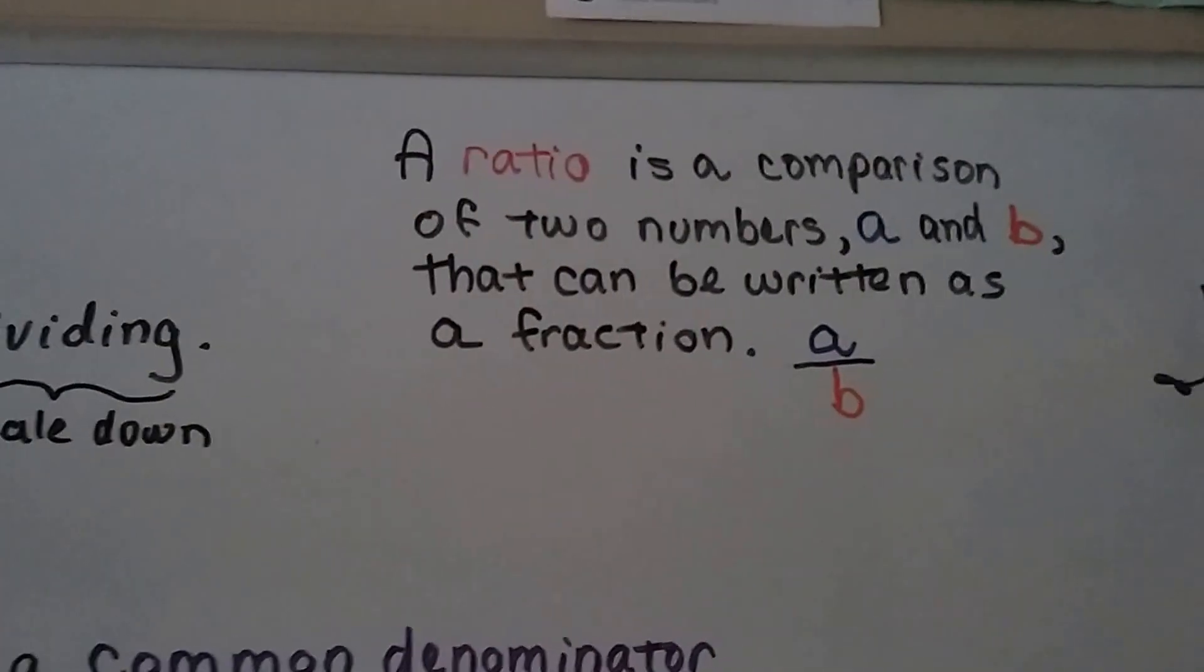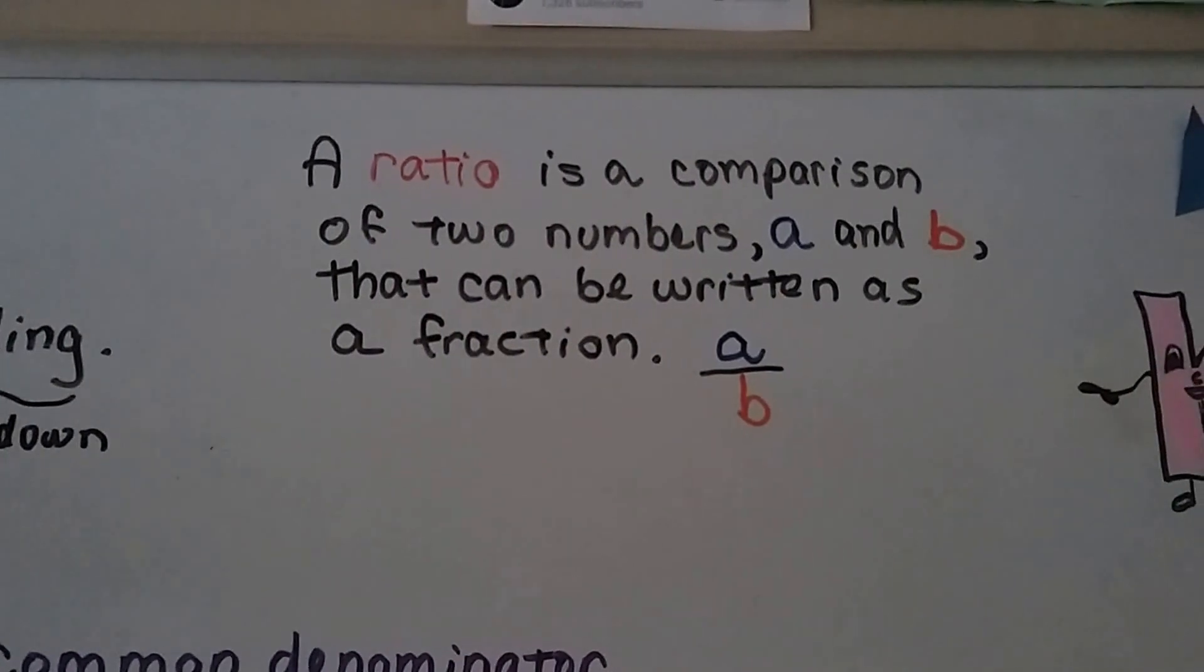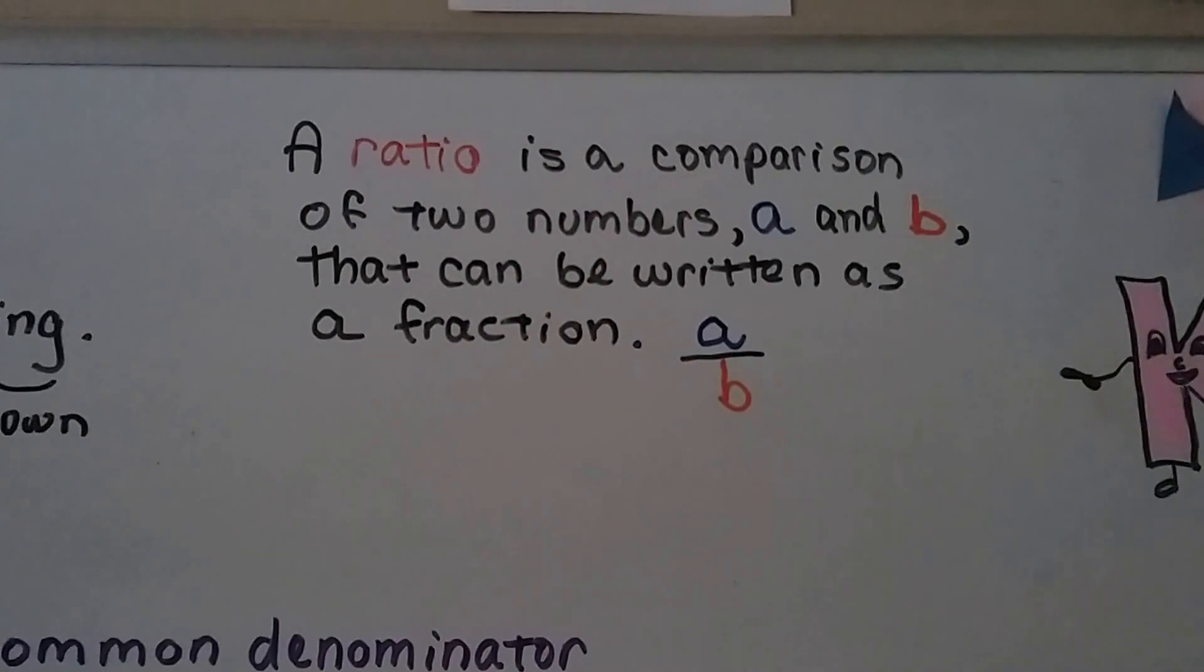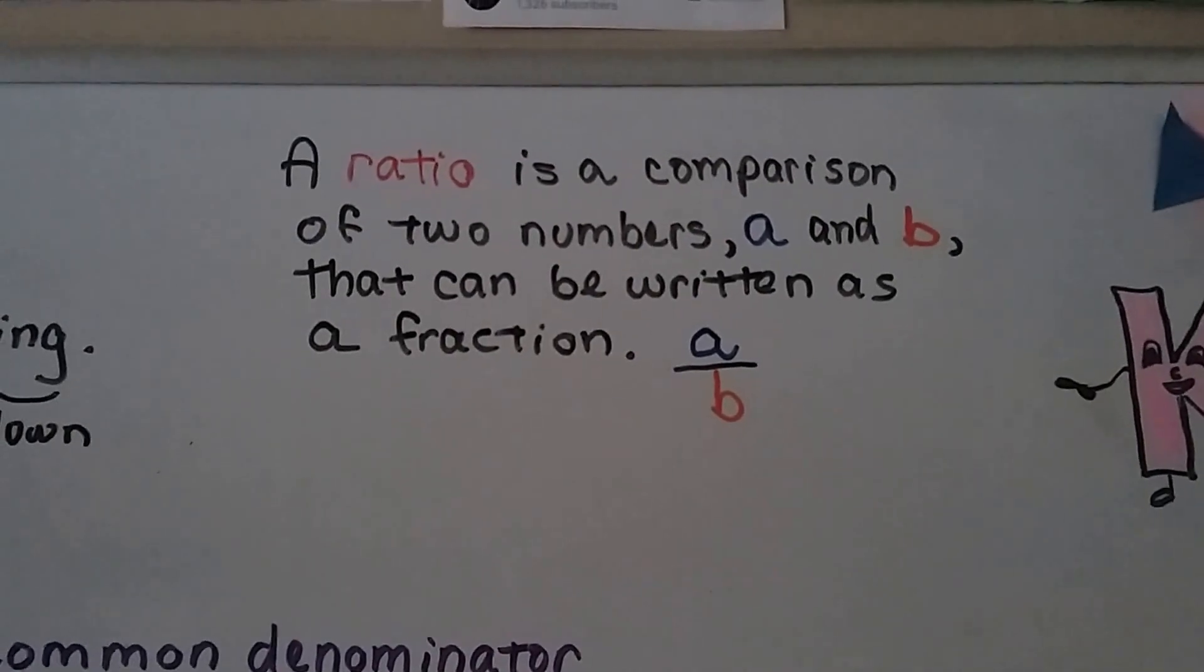A ratio is a comparison of two numbers. So if we have a and b for our numbers, they can be written as a fraction a over b. If we had one and two, we could put one over two and have a half.